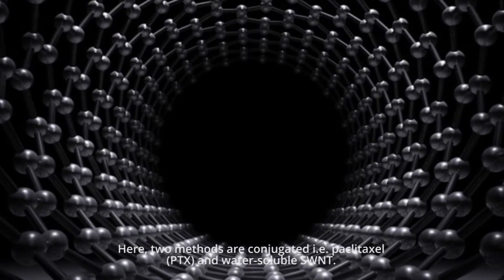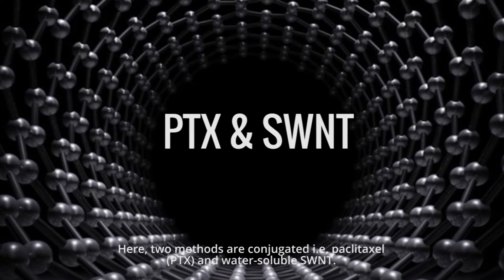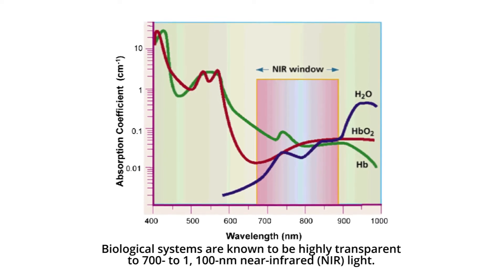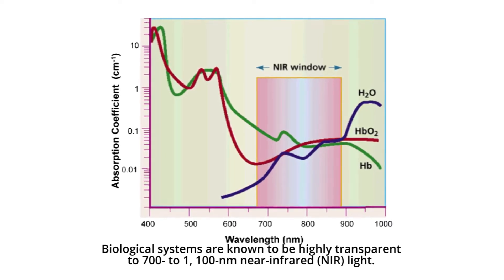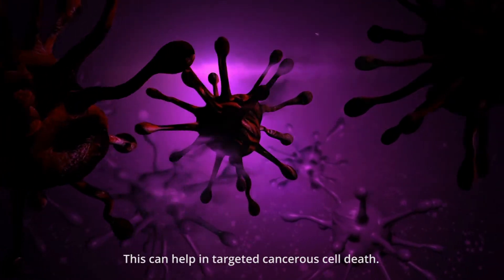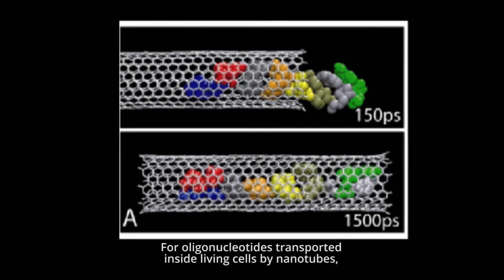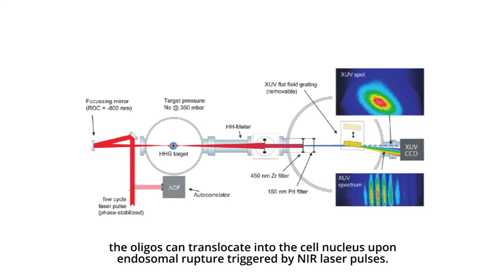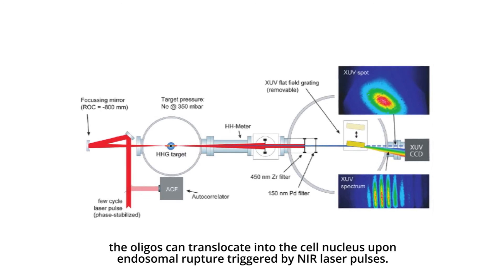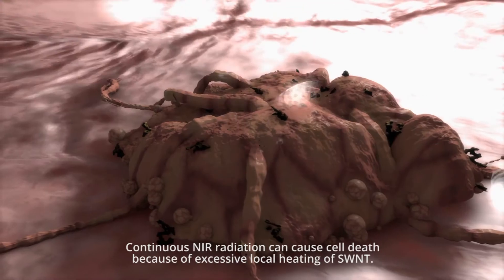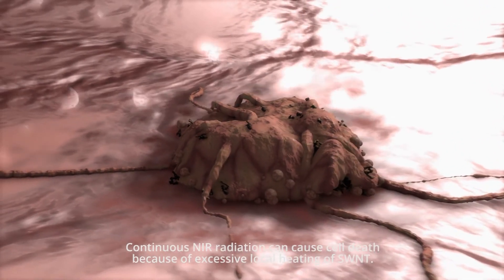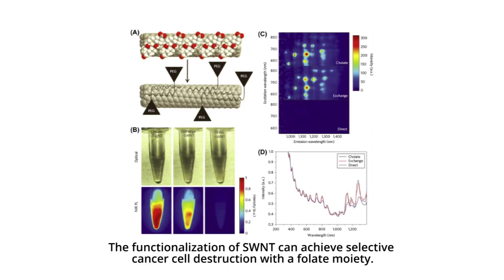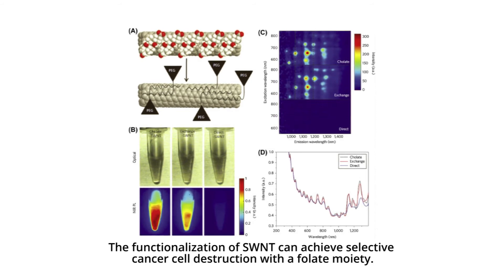Here, two methods are conjugated, i.e. Paclitaxel and a water-soluble derivative. Biological systems are known to be highly transparent to 700–1,100 nm near-infrared and IR light. This can help in targeted cancerous cell death. For oligonucleotides transported inside living cells by nanotubes, the oligos can translocate into the cell nucleus upon endosomal rupture triggered by NIR laser pulses. Continuous NIR radiation can cause cell death because of excessive local heating of SWNTs.